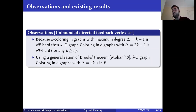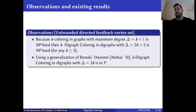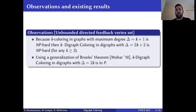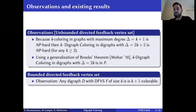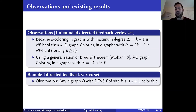Since this problem is closely related to cycles, we explore parameterized complexity based on parameters related to acyclicity. One such parameter is the directed feedback vertex set (DFVS): a set of vertices whose removal makes the digraph acyclic. If a digraph has DFVS of size k, it is always k+1 colorable — use one color per DFVS vertex and one color for the remaining acyclic part.